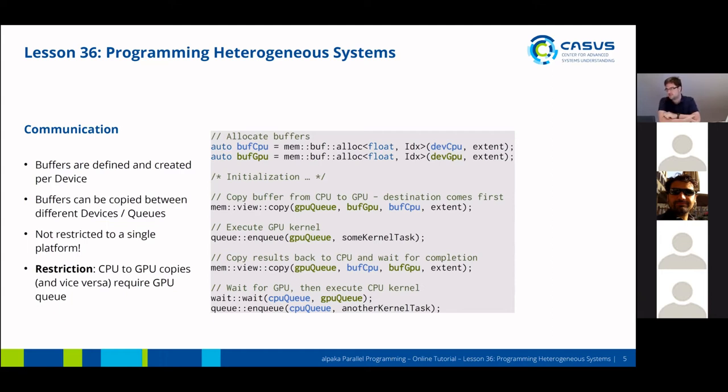These then have to be initialized somehow. And then they can be copied from the CPU to the GPU, for example. So you just use the copy command, pass in the GPU queue as first parameter, then the destination, then the source, and the extent of the buffer. You can then execute a GPU kernel on the queue, and then you can copy the results back to the CPU and wait for completion.